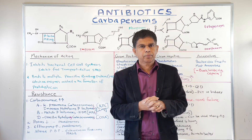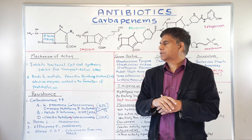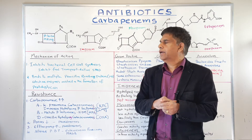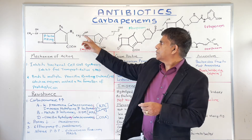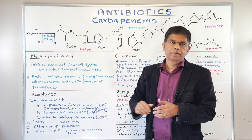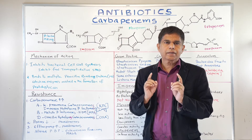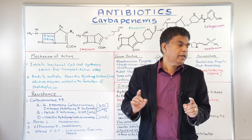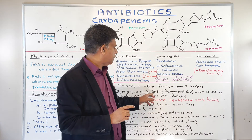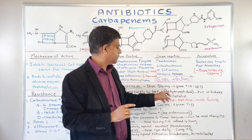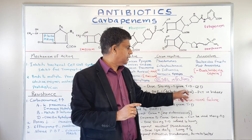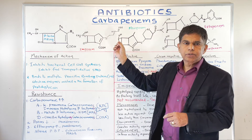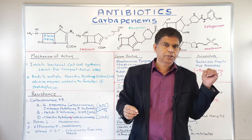There are four drugs in the carbapenem category. The classic drug initially developed is imipenem. Looking at the structure, imipenem lacks the R1 group. Because of that, it can be rapidly hydrolyzed by DHP-1, which is dehydropeptidase-1. Remember that.